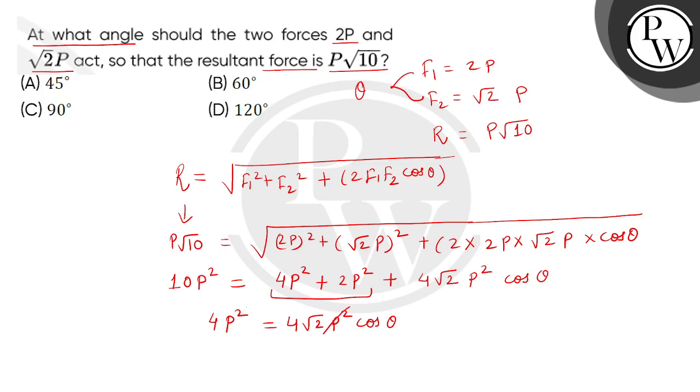Both sides P square, P square cancel, 4, 4 cancel. Then we get cos theta equals to 1 divided by square root of 2, it means theta value will be 45 degrees, so correct option is option A.